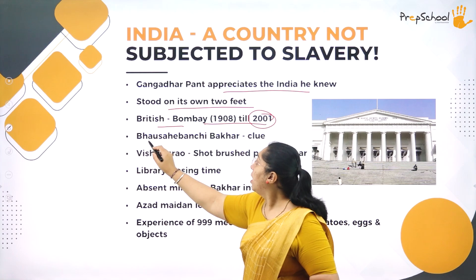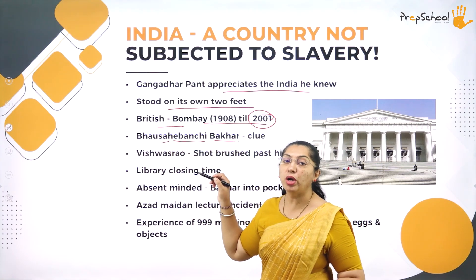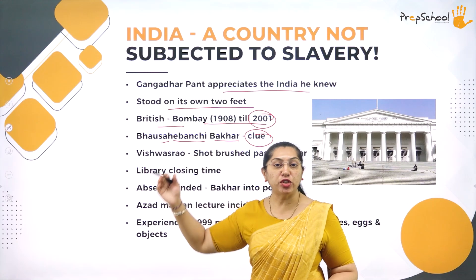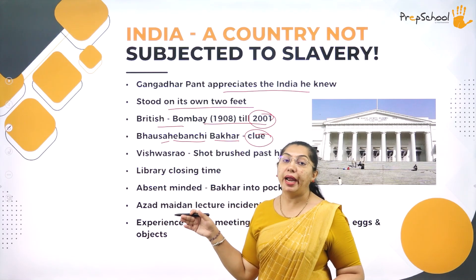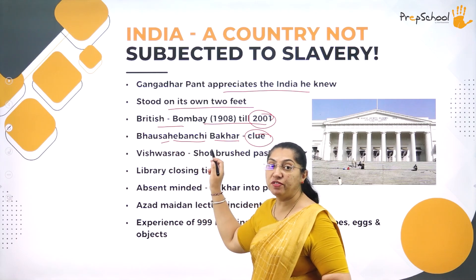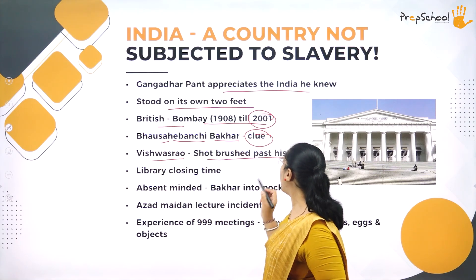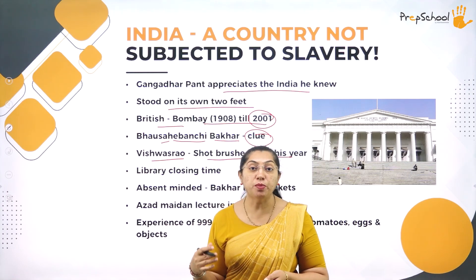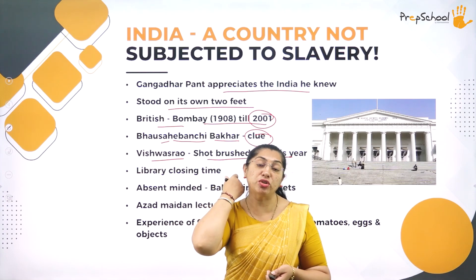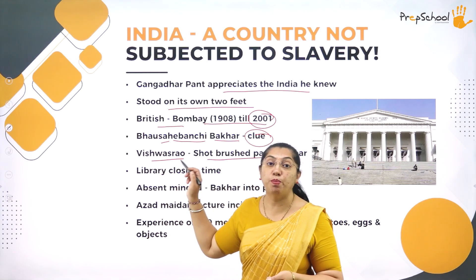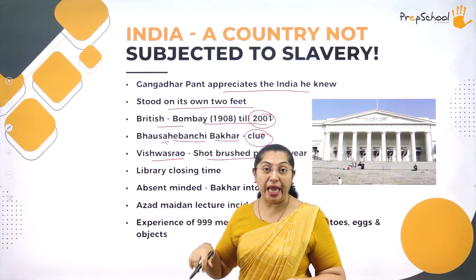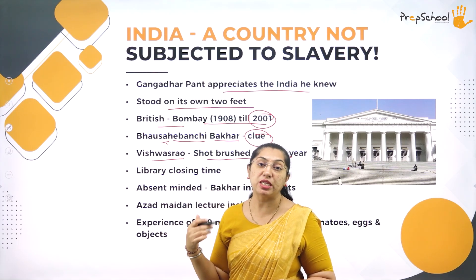There is a person, Bahusaheb Banchi Barkar, who had written a book with a clue in it. In Gangadhar Pant's parallel world, he says the Marathas won the war — but actually it was the Abdali troops who won. The book by Bahusaheb Banchi Barkar says that Vishwas Rao was shot and the bullet just brushed past his ears and passed. According to this book, Vishwas Rao is alive — the bullet only grazed his ears.